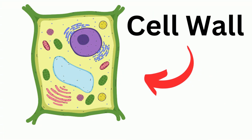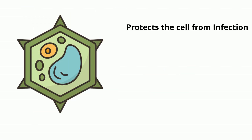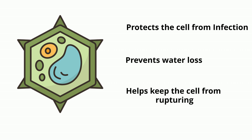The cell wall is found in plant cells and fungal cells, but not in animal cells. It is a rigid layer made of cellulose that surrounds the cell and gives the cell structure. It helps protect the cell from infection, prevents water loss, and helps keep the cell from rupturing.